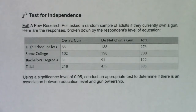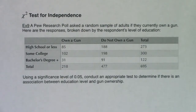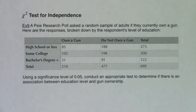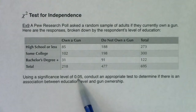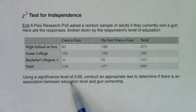We're going to take our first look at a chi-squared test for independence. There are similarities to the goodness of fit test, but the fundamental difference is that you're looking at two categorical variables instead of one. A Pew Research poll asked a random sample of adults if they currently own a gun, with responses broken down by education level. Using a significance level of 5%, we'll determine if there's an association between education level and gun ownership.